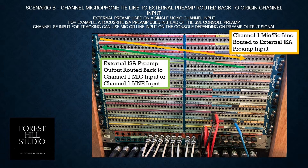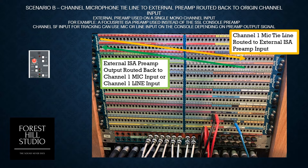The next scenario: if we have a channel microphone tie line and want to use an external preamp and route that back to Origin instead of using Origin's internal preamp, we would take the tie line, route that out to the ISA preamp input, and then bring it back into the mic or line input of the same channel 1, depending on what you were using. You can see over here the section that was used for doing that.